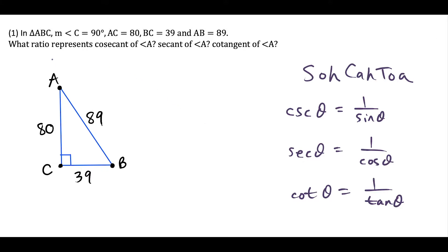For a question like this, if we want to find the ratio for cosecant of angle A, we're starting at angle A over here. One thing we could do is label the sides relative to angle A. This side, CB, is opposite of angle A. This side right next to angle A is adjacent. And the side across from the right angle is always the hypotenuse.